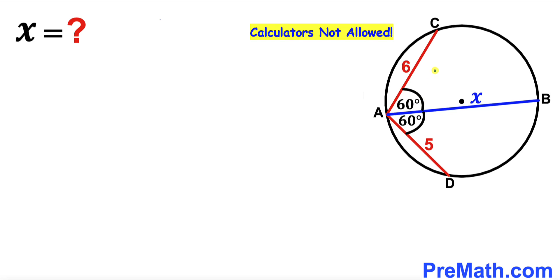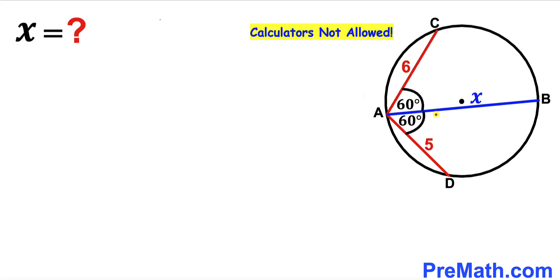Welcome to pre-math. In this video we have three chords AC, AB, and AD inside the circle. The chord AC is six units long, chord AD is five units, and chord AB has length x. Furthermore, angle BAC is 60 degrees and angle BAD is 60 degrees as well. Our task is to calculate the length AB — in other words, find x — without using a calculator.